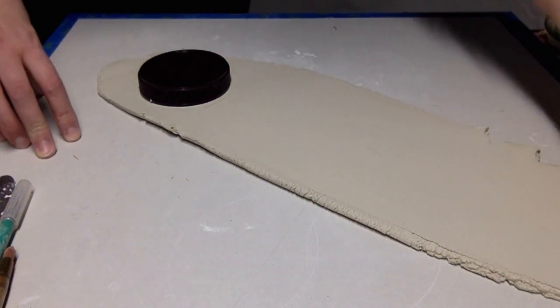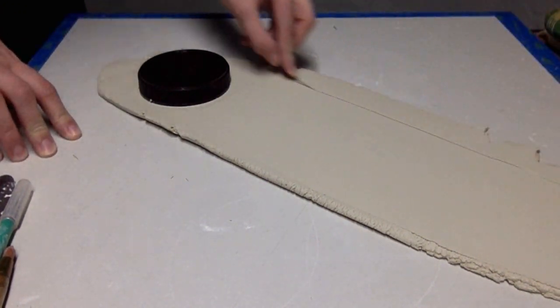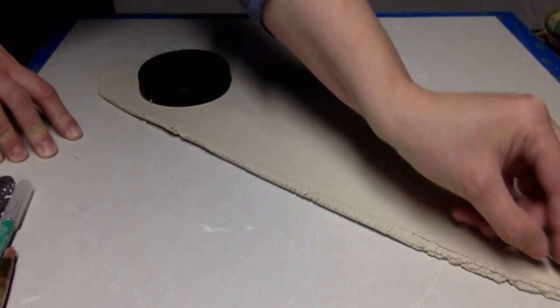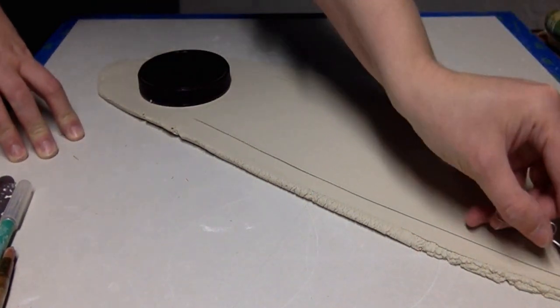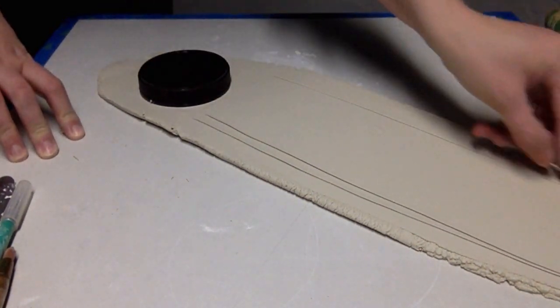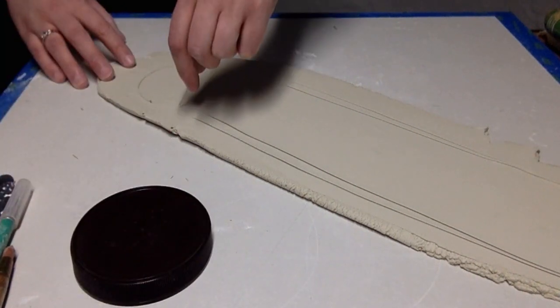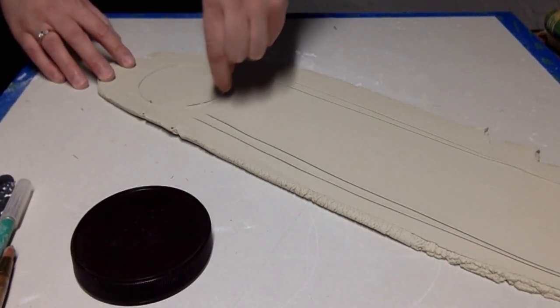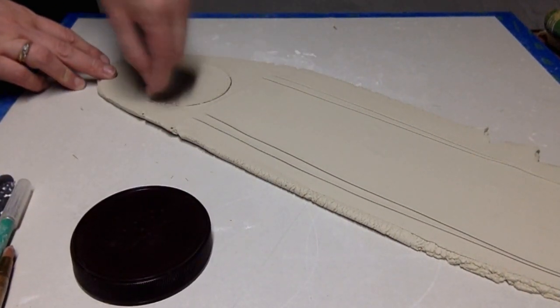Now that I have the circle traced for the bottom, I'm going to sketch out the rectangle that will become the side walls of the planter. It's important to get the walls pretty straight, so if I see that my lines aren't straight enough, I just do them again.